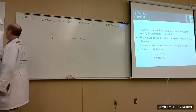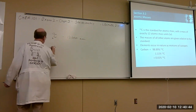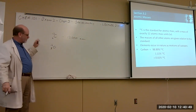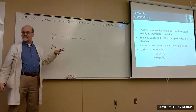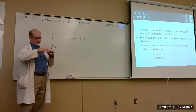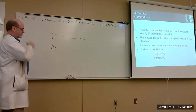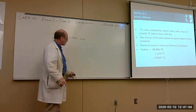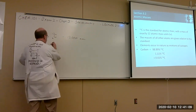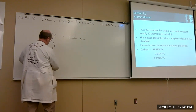For example, oxygen-16 has eight protons and eight neutrons, but its mass is not going to be exactly 16 — it would be a slight fraction off from 16, related to the carbon-12 standard.